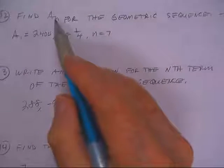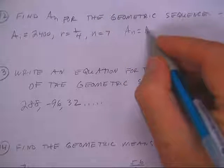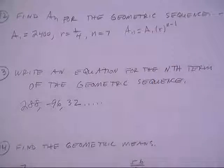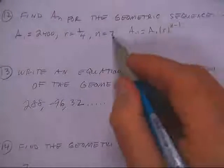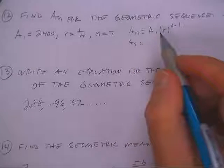Welcome back. You notice on this one they want An for geometric. Well, this is my geometric formula. And they want the nth term, and they tell me n is 7. So they're really asking me for the 7th term.